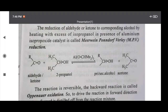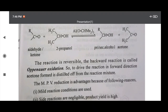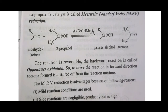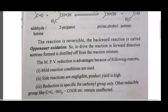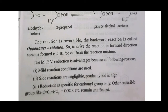In this reaction aluminum isopropoxide is the catalyst and aldehyde and ketone are converted to the corresponding alcohol. This reaction is reversible, and the backward reaction is called Oppenauer oxidation. To drive the reaction in the forward direction, the acetone formed is distilled off from the reaction mixture. MPV reduction is advantageous because: mild reaction conditions are used, side reactions are negligible, product yield is high, and the reduction is specific for the carbonyl group only. Other reducible groups like C=C, NO₂, COR, etc. remain unaffected.